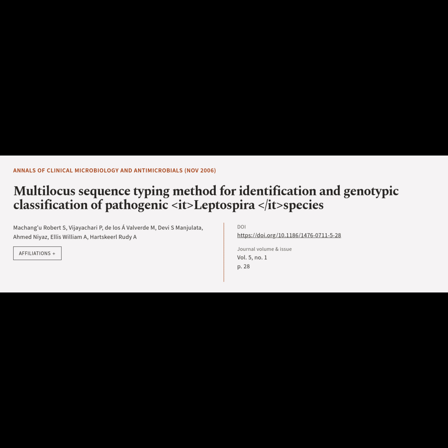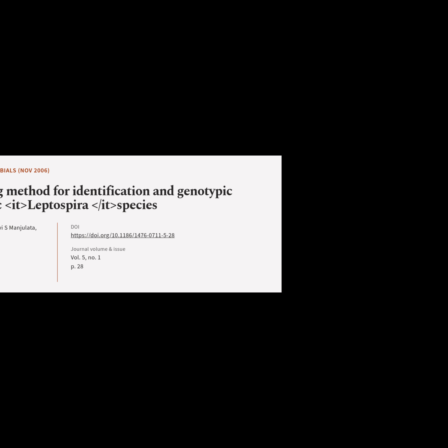This article is titled "Multilocus Sequence Typing Method for Identification and Genotypic Classification of Pathogenic Leptospira Species," and was authored by Robert Moshangu, Vajayachari, Valverda Loster, Manjelata Devi, Nias Ahmed, William Ellis, and Rudy Hartskill.